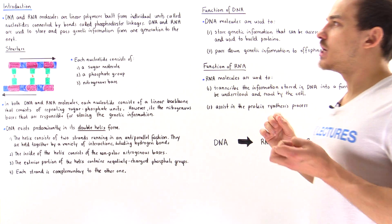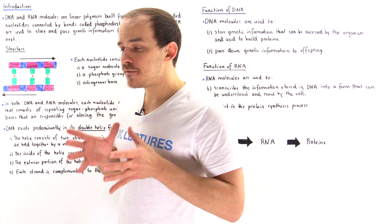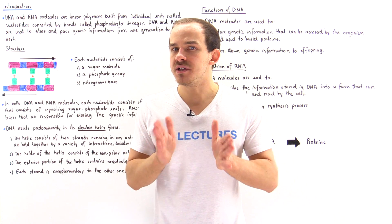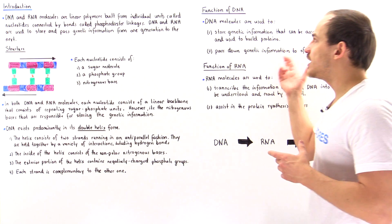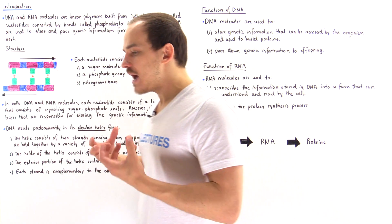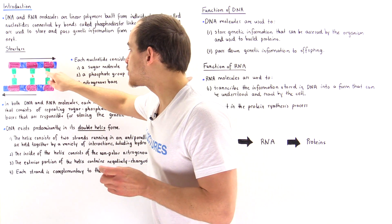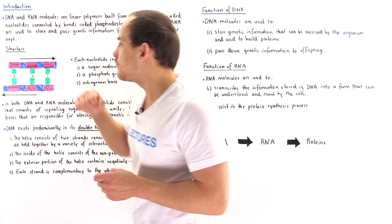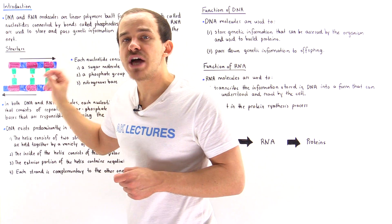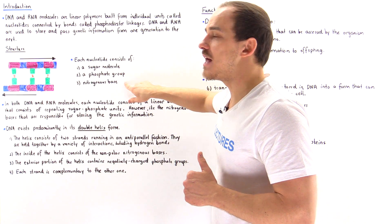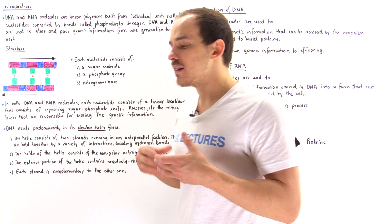So what about the function of DNA and RNA? The entire purpose of these nucleic acids is to store the genetic code and genetic information in the cell, use it to build different types of proteins, and when we reproduce, to pass that genetic information down to offspring. DNA molecules store the genetic information in the sequence of nitrogenous bases. The backbone — consisting of the sugar and phosphate — repeats from nucleotide to nucleotide and does not change. What changes is the sequence of nitrogenous bases, and it is within that sequence where the genetic information is stored.